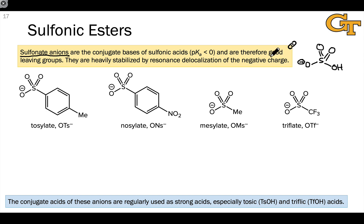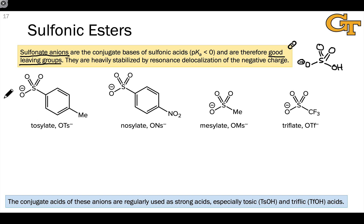Therefore, according to our definition of good leaving groups, they are absolutely good leaving groups — or as we call them, nucleofuges. They would like to take a pair of electrons with them to form these anions when found in organic structures.